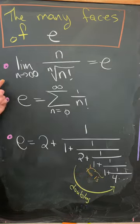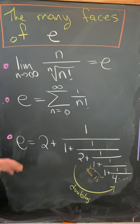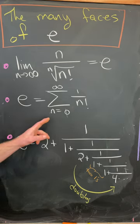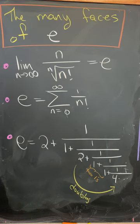It can also be written as the limit as n goes to infinity of n over the nth root of n factorial, or as the sum as n goes from 0 to infinity of 1 over n factorial.